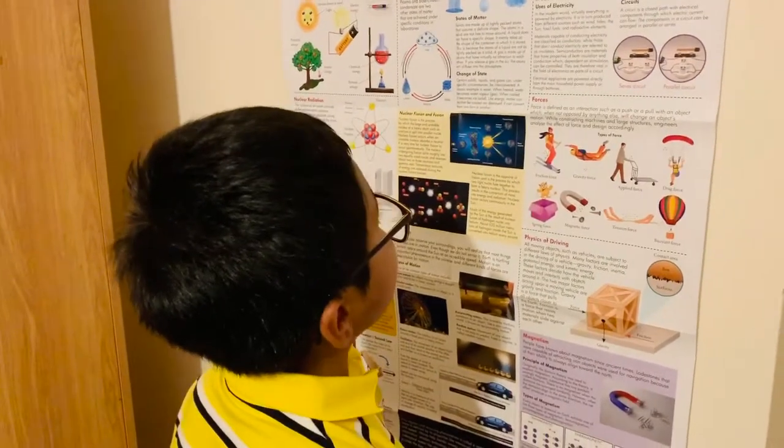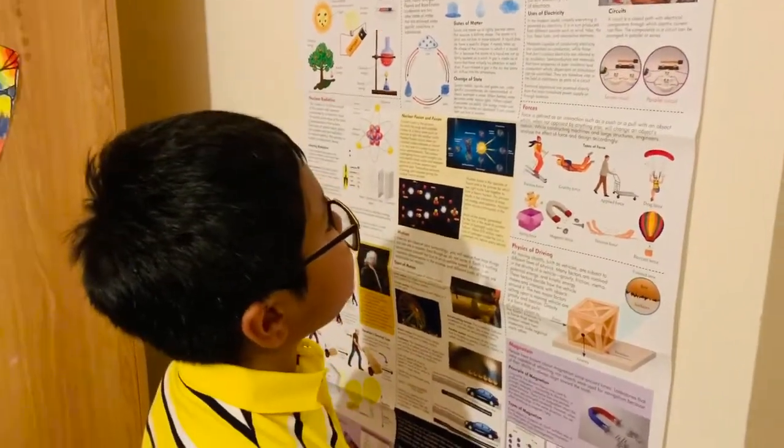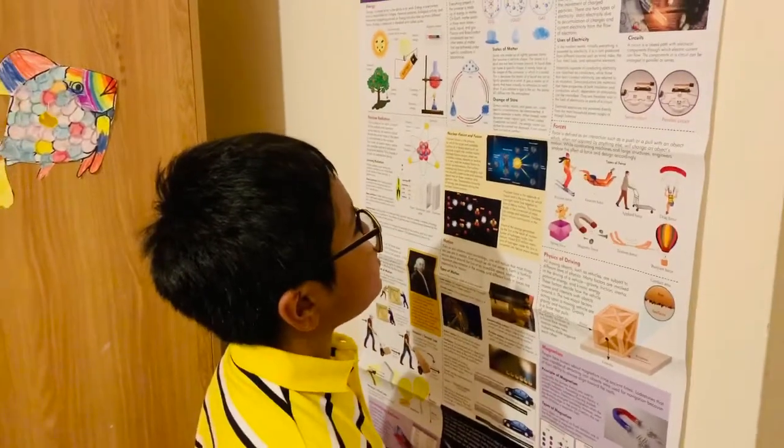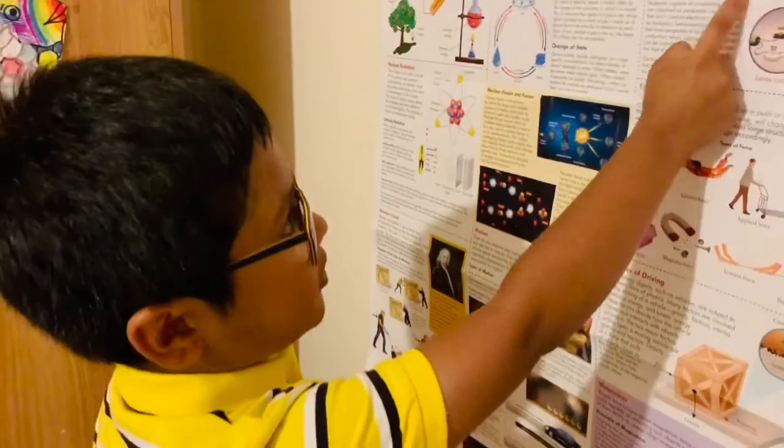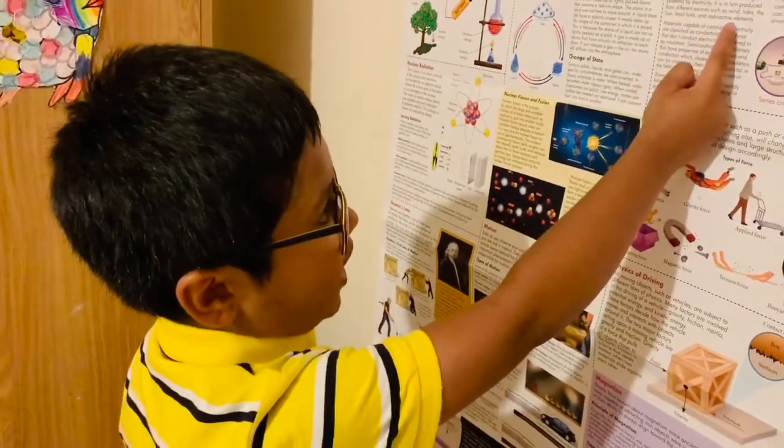Uses of electricity. In the modern world, virtually everything is powered by electricity. It is turned from different sources such as wind, tides, the sun, fossil fuels, and radioactive elements.